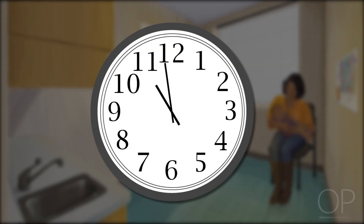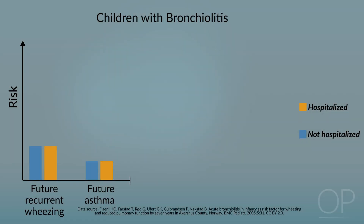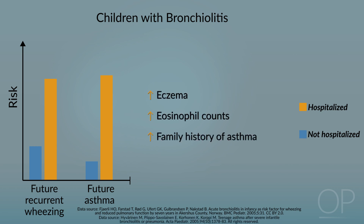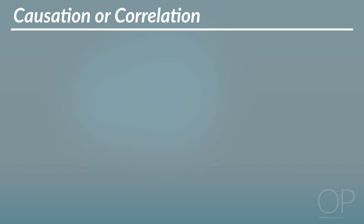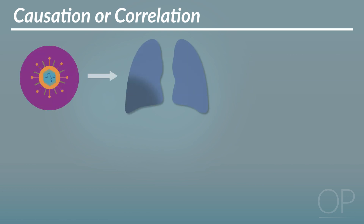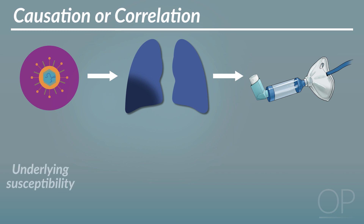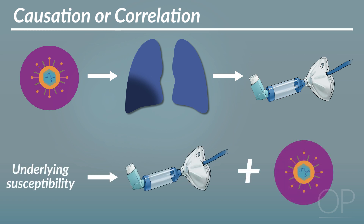Bronchiolitis is a self-limited illness and will resolve in most children without complications. Interestingly, children with bronchiolitis severe enough to be hospitalized have an increased risk of recurrent wheezing and asthma even into early adulthood. These children are also more likely to have eczema, high eosinophil counts, and a family history of asthma. These observations have led researchers and clinicians to wonder whether bronchiolitis causes lung injury which leads to asthma, or whether the underlying susceptibility to asthma also confers risk for severe bronchiolitis. The bulk of the evidence seems to point toward shared underlying susceptibility rather than direct lung injury inflicted by a viral infection.